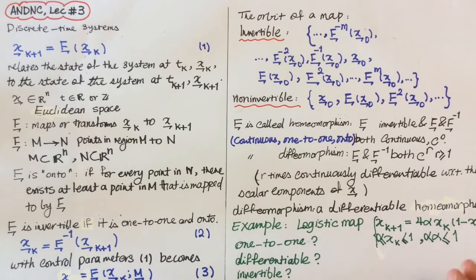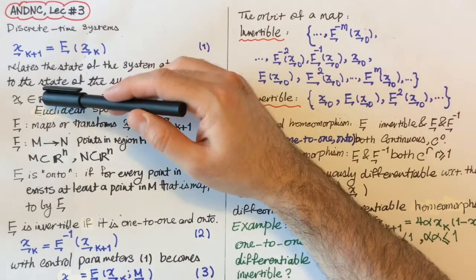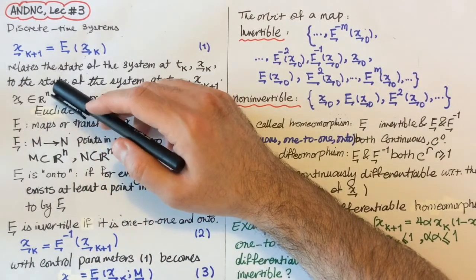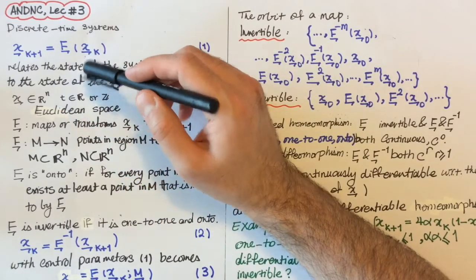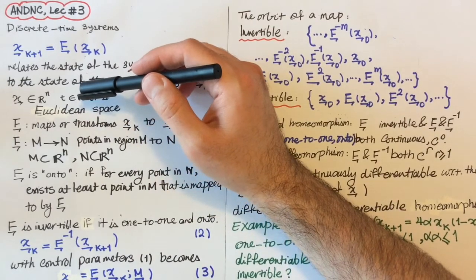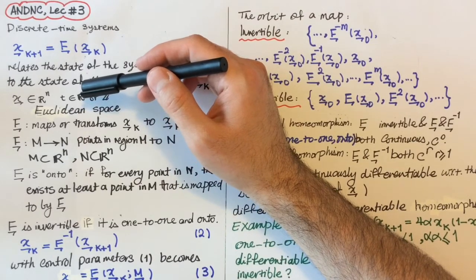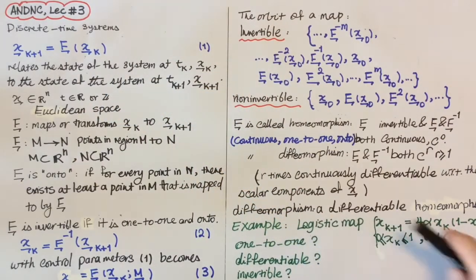In general, x belongs to Euclidean space R^n. The Euclidean space is created by an n-dimensional real domain, and t belongs to the real domain. If time is only evaluated or only considered for integers, then t belongs to integer numbers, the set of integer numbers.